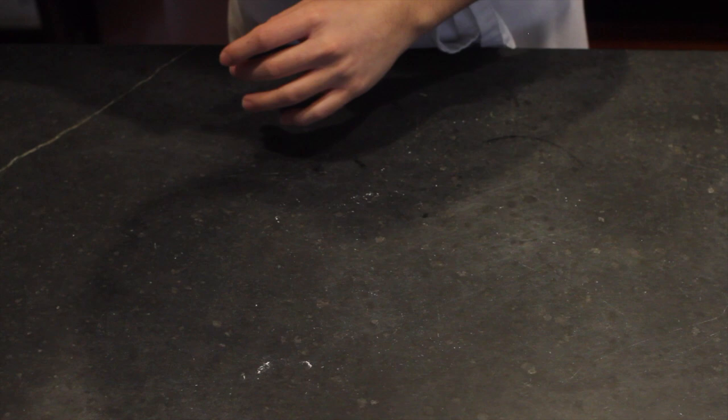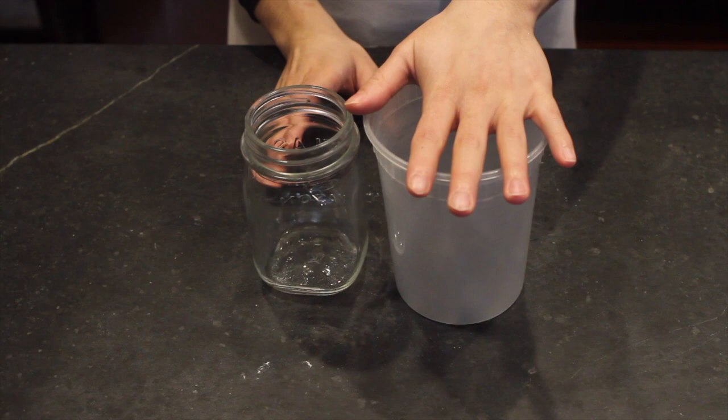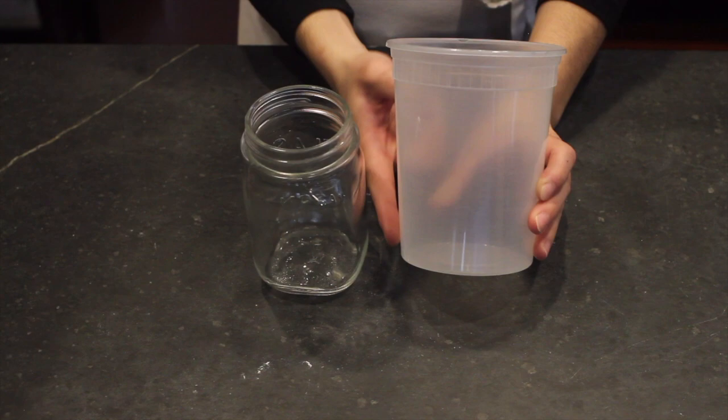You're going to want a clear container. Glass or food grade plastic works. I have quite a few quart containers in my house, so that's my preference. I say clear container because you want to be able to see the rise and fall of your starter. That's how you're going to learn its patterns and develop a healthy feeding schedule for the two of you.